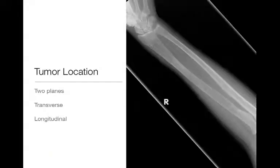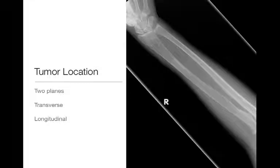When we talk about tumor location, we describe it in two planes: the transverse plane and the longitudinal plane.